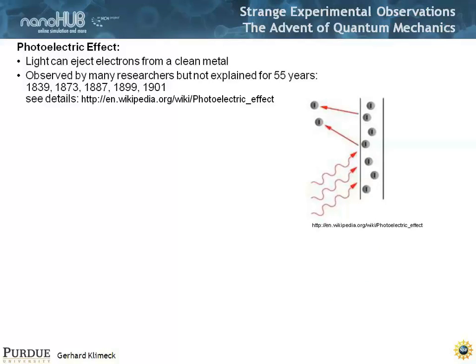So that led to the advent of quantum mechanics as such. But then there was another experiment that was very puzzling. It was first observed in 1839, and it wasn't explained until 55 years later. Here's the experiment: people were shining light on a metallic surface, and they saw electrons come out. It's the so-called photoelectric effect.